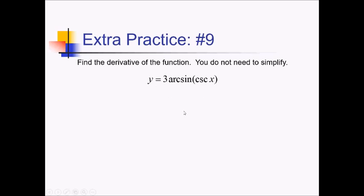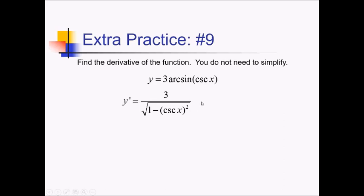To take the derivative of this expression, I need the chain rule. The outer function is 3 arcsine of something — that's going to be 3 over the square root of 1 minus the something squared. Next, we multiply by the derivative of the something, which is the derivative of cosecant of x, which is negative cosecant of x cotangent of x. And this one's as good as it's going to get.